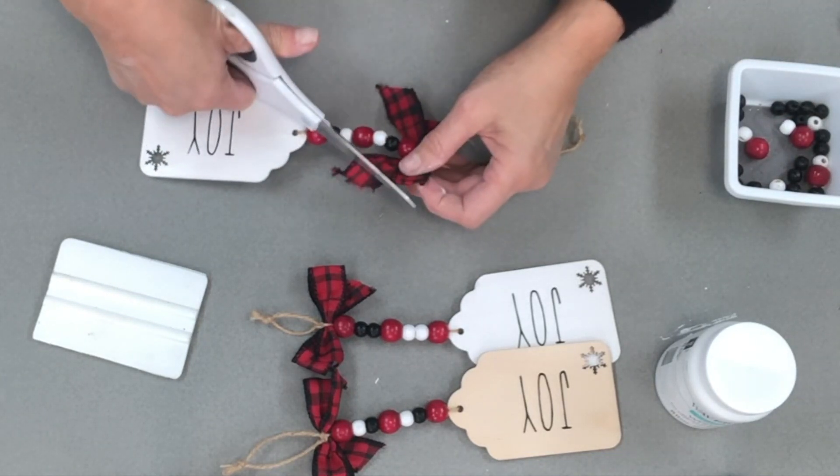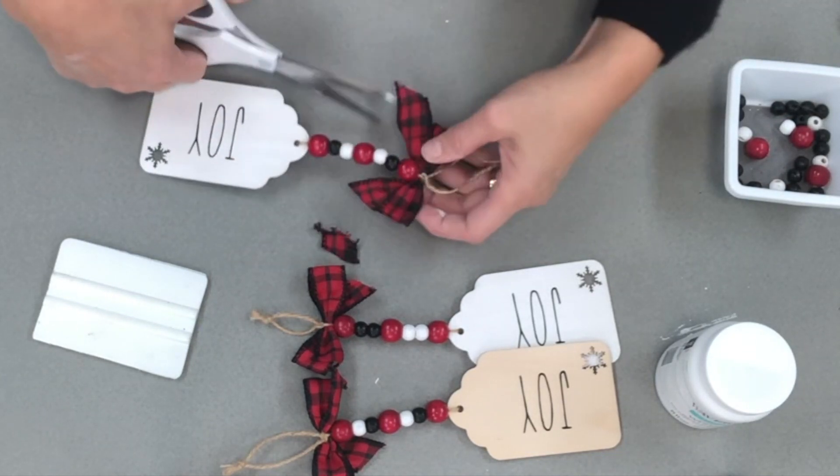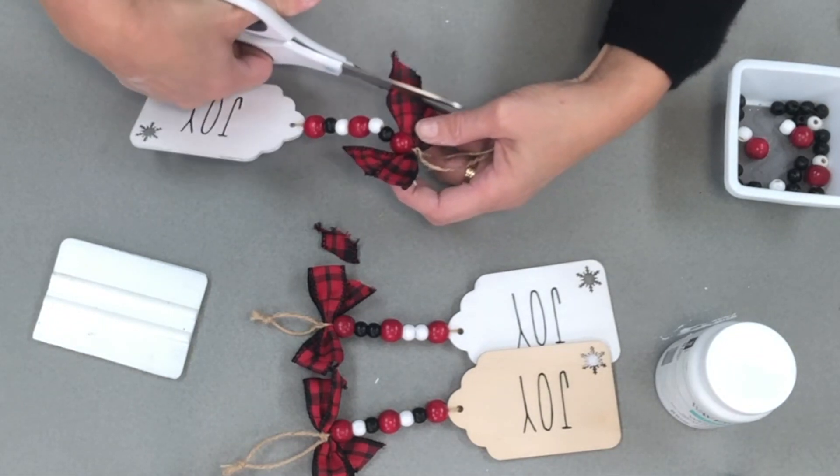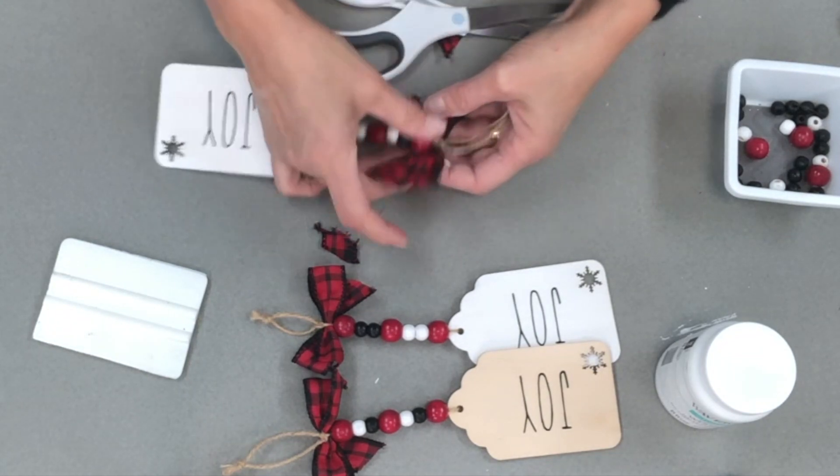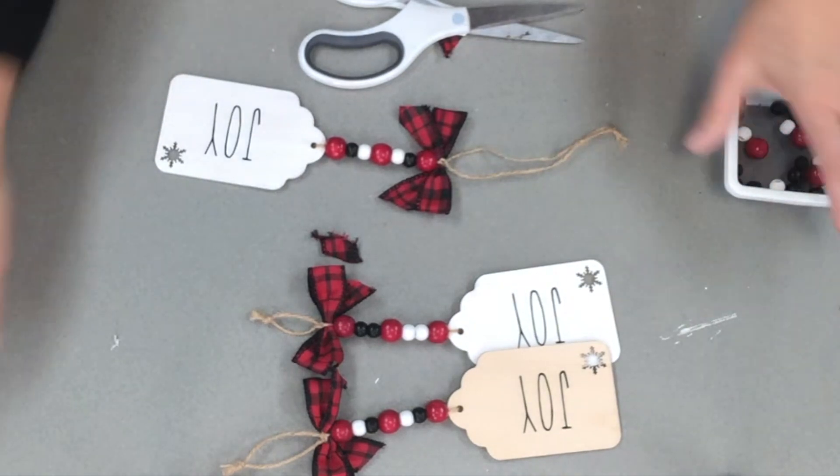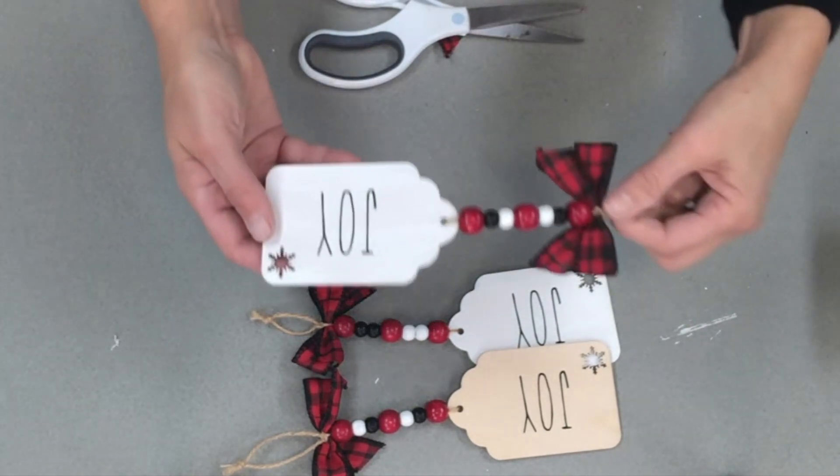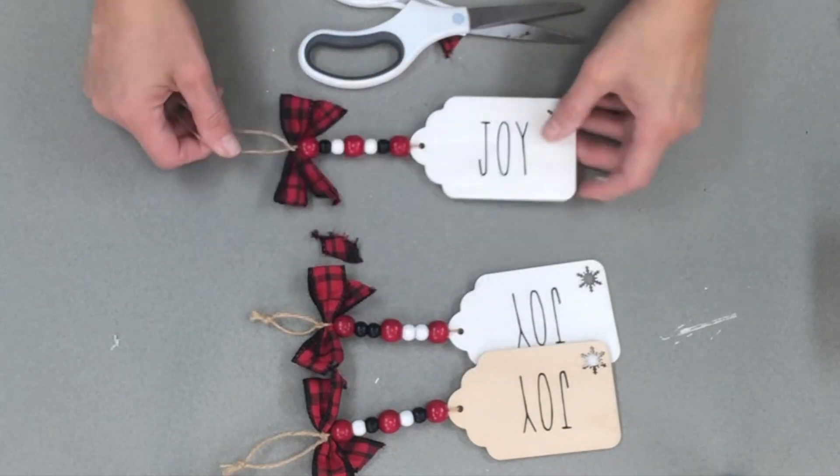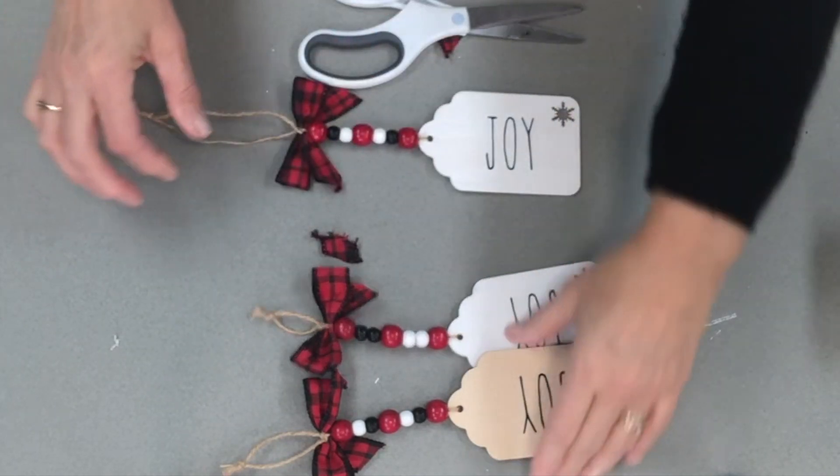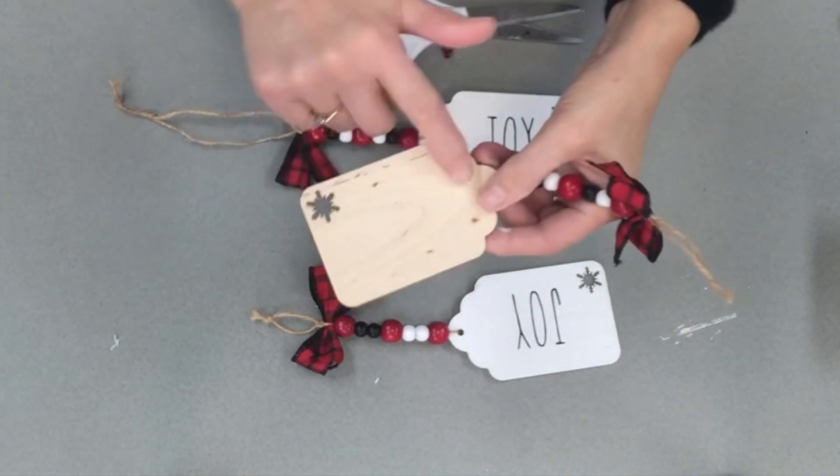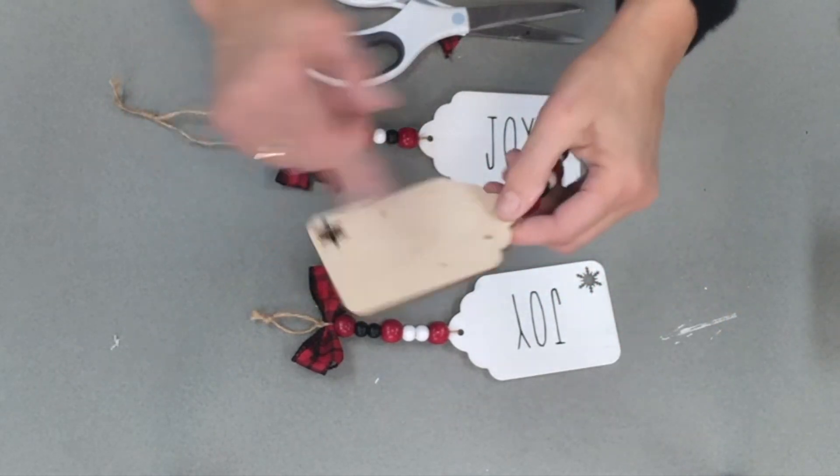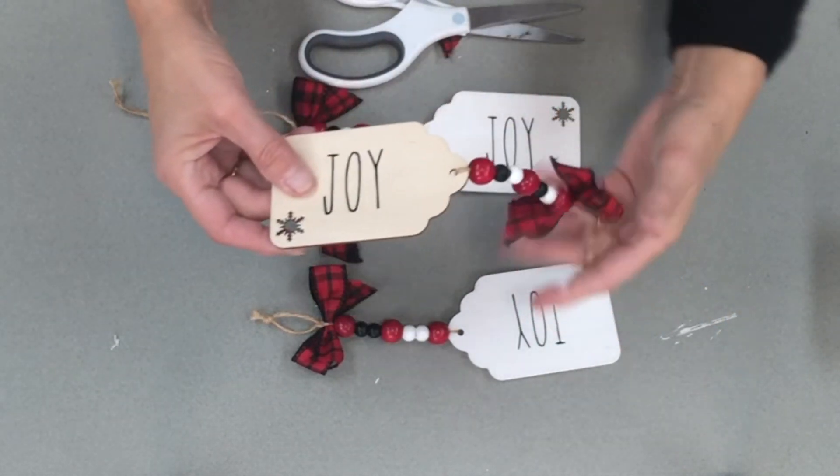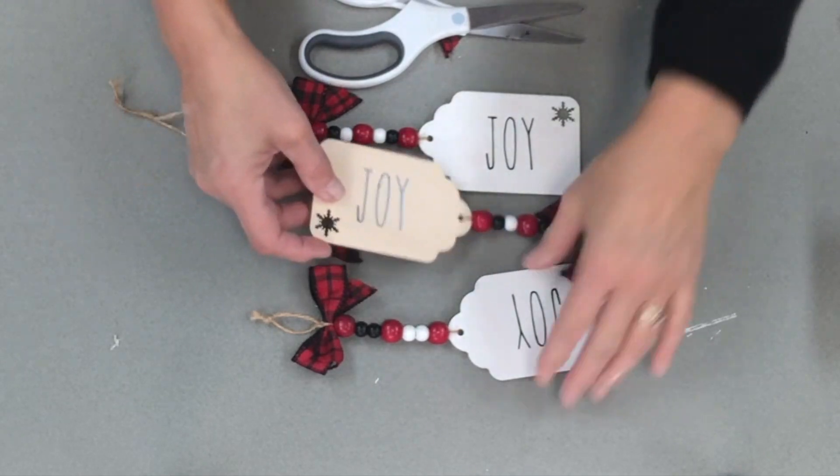I'm gonna trim my bow up just a little bit. And there you have it you guys, quick and easy. How cute is that little tag? So now I've got a joy one and then this one I left it blank on the back, didn't paint it. So this will be an idea if you want to write a note for somebody. How cute would that be?